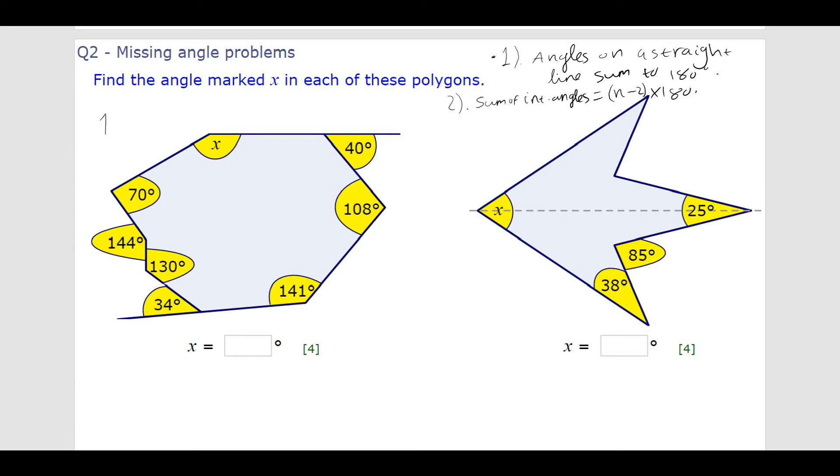So, for the first example, first thing I'm going to do is find all of the missing angles inside the polygon. So, I can see there's one here, and then I can use the fact that angles in a straight line add up to 180 by just subtracting 34 from 180 to find that missing angle. So, let me do that, 6, 4, 1.